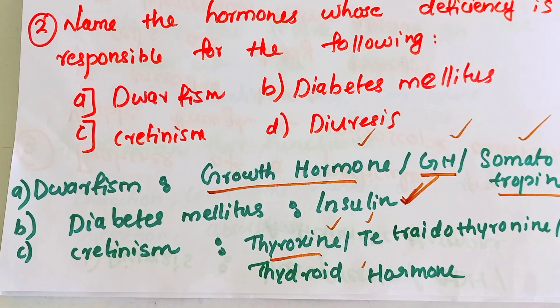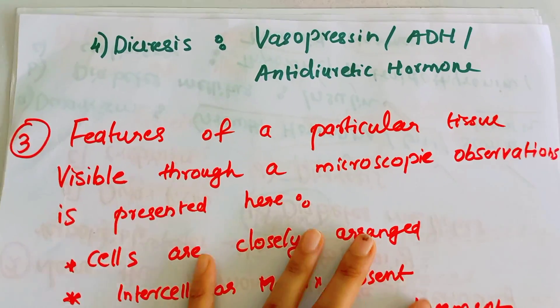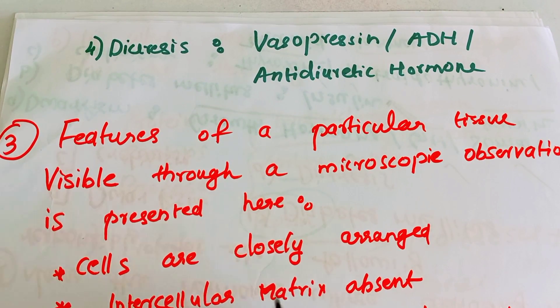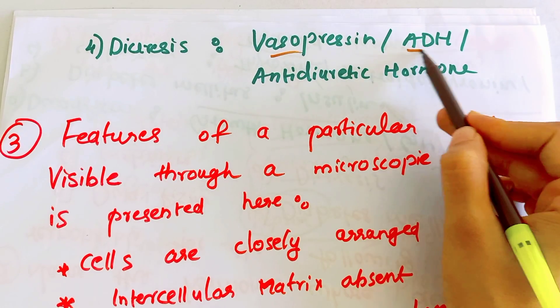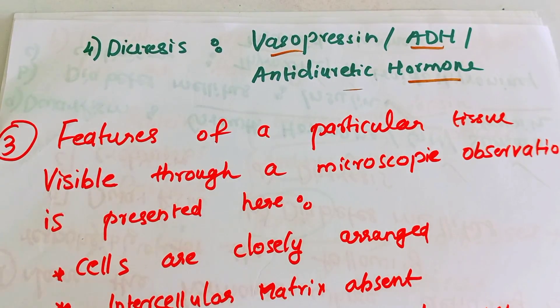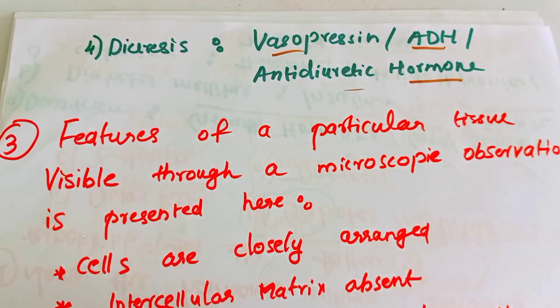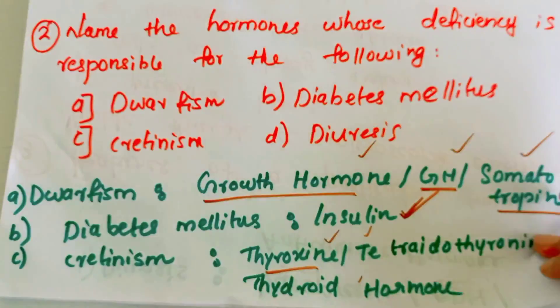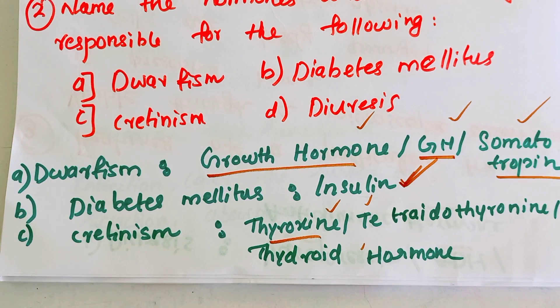For Diuresis, the deficient hormone is Vasopressin, also called ADH — Antidiuretic Hormone. These are the hormone deficiencies: Dwarfism, Diabetes mellitus, Cretinism, and Diuresis correspond to Growth Hormone, Insulin, Thyroxin, and Vasopressin/ADH respectively.